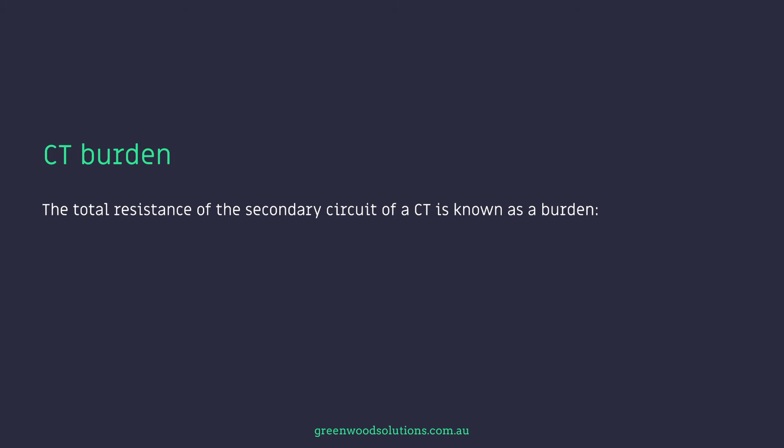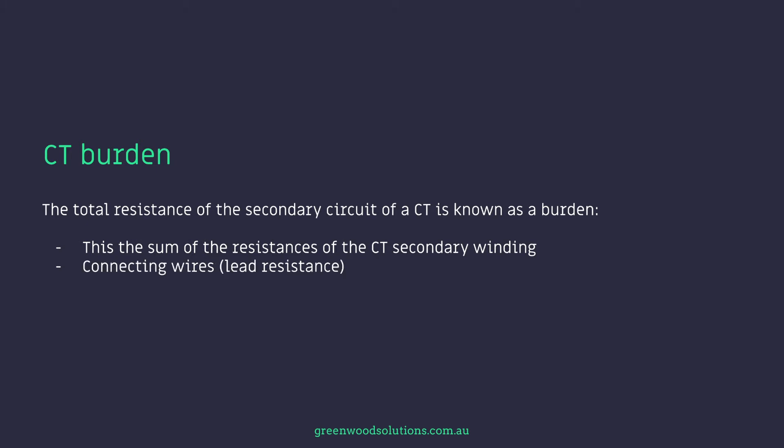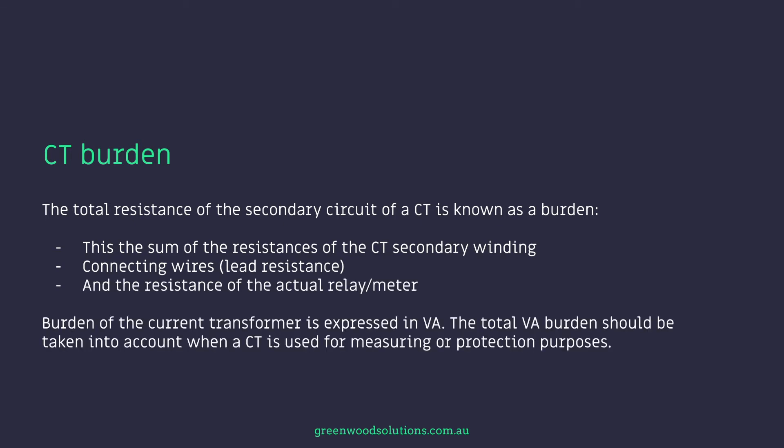Here's the interesting thing: the CT burden. The total resistance of the secondary circuit of a CT is known as a burden. This is the sum of the resistance of the CT secondary winding, connecting wires, the lead resistance, and the resistance of the actual relay meter. Burden of the current transformer is expressed in volt amps. The total VA burden should be taken into account when a CT is used for measuring or protection purposes, especially on large LGC systems. CT burden is not a term you'd hear very often, but it is incredibly important when it comes to the metering and calculation of energy produced from these LGC systems.